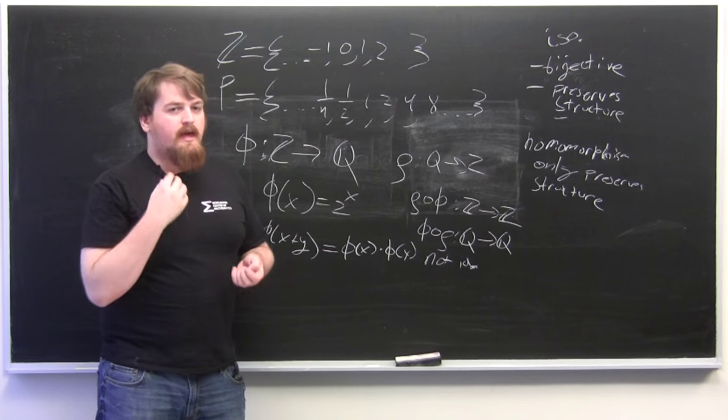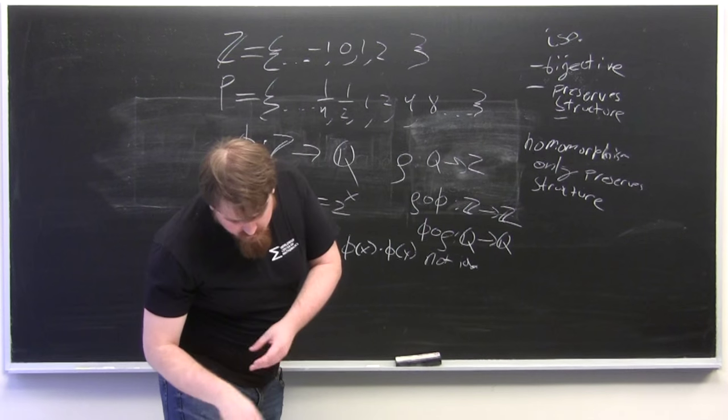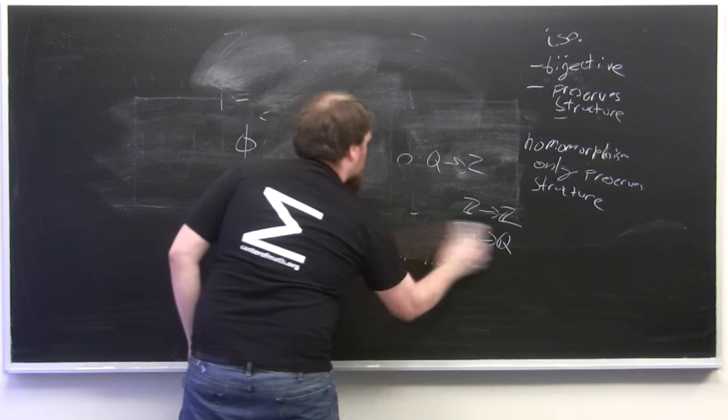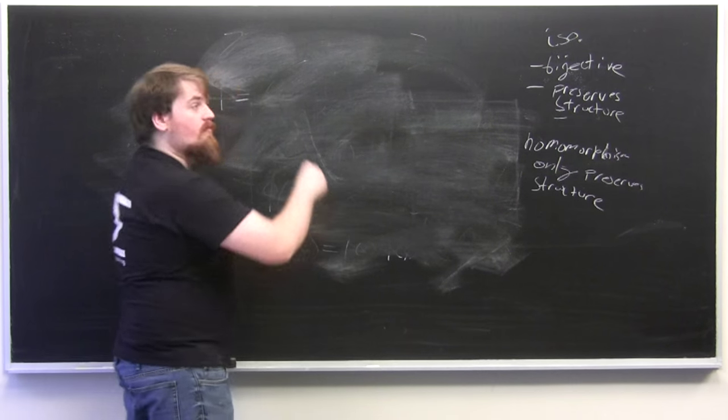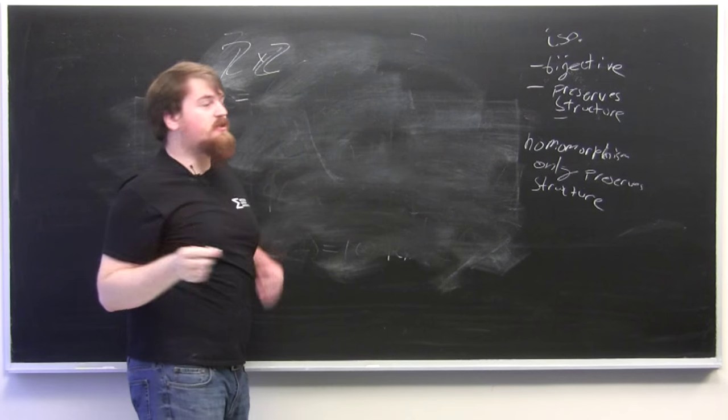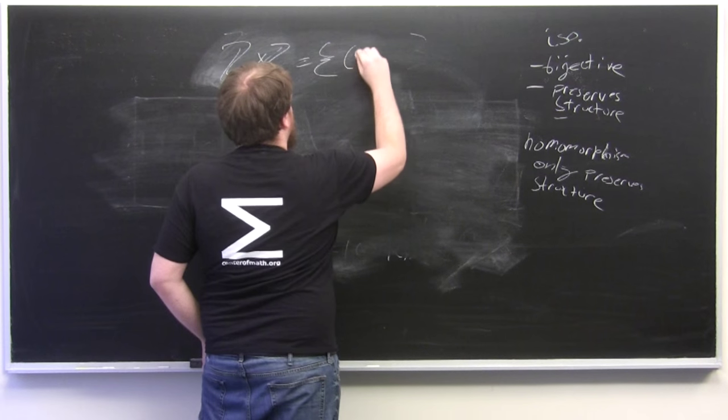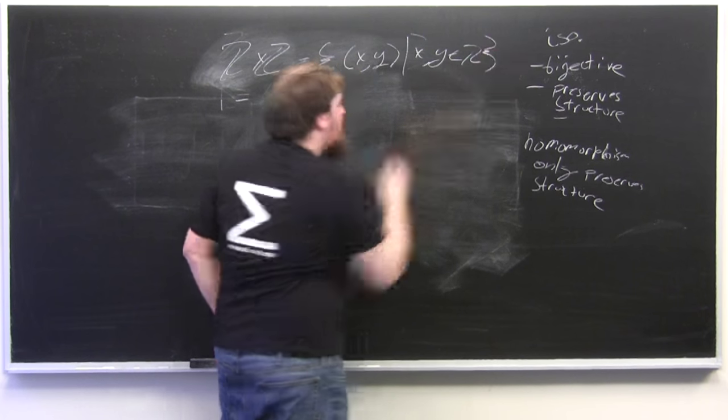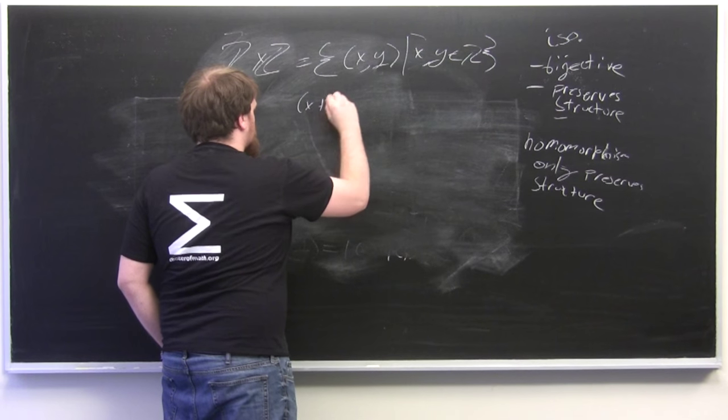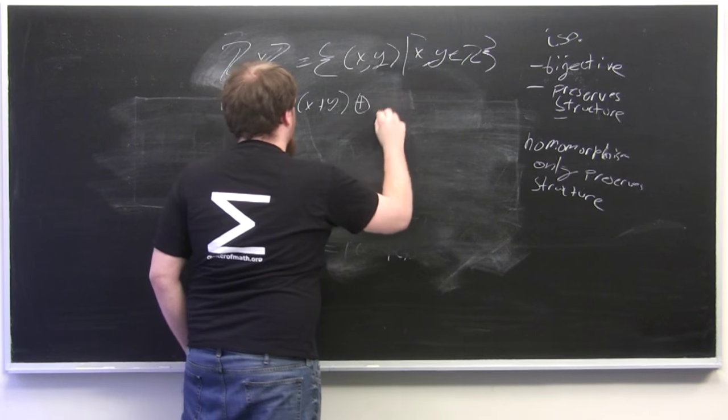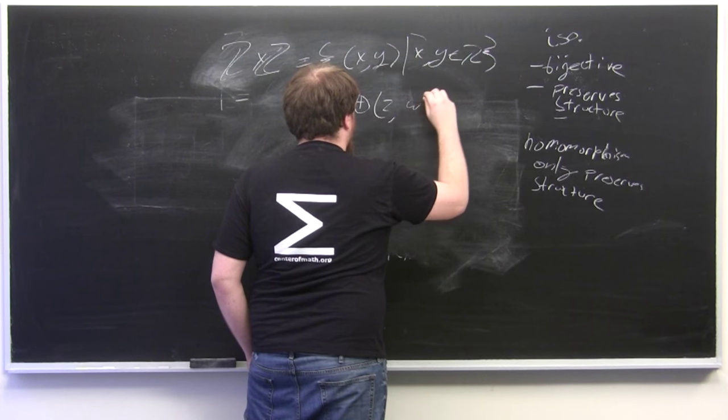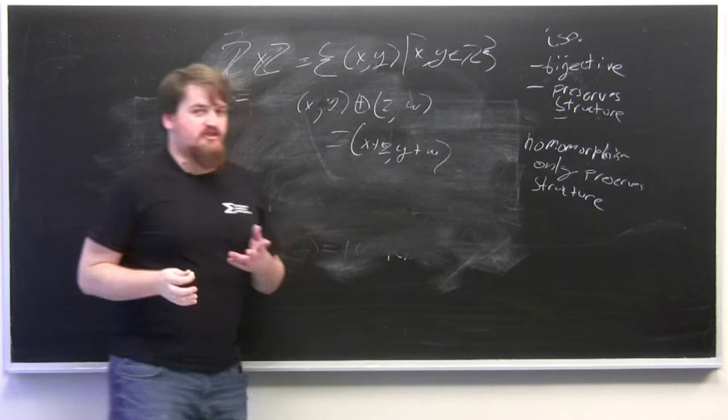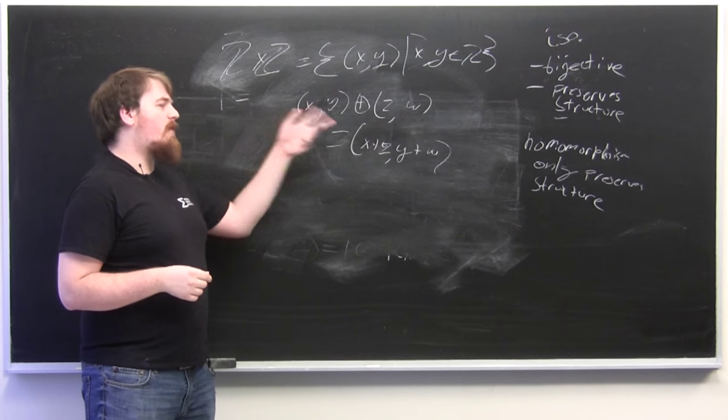So an example of a homomorphism that is onto but is not one-to-one would be, I'm going to erase this for now. So we have the group Z times Z which is the group of ordered pairs of elements in Z and whose operation, we'll call it circle plus, whose operation is just the pairwise sum of elements, the pairwise sum of the two elements in each ordered pair.